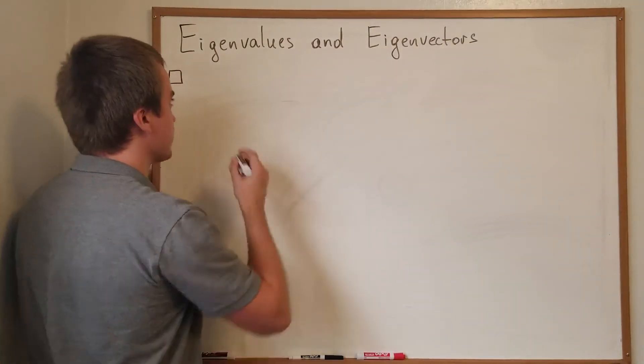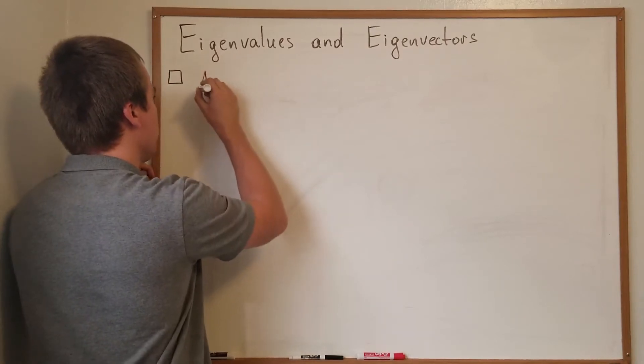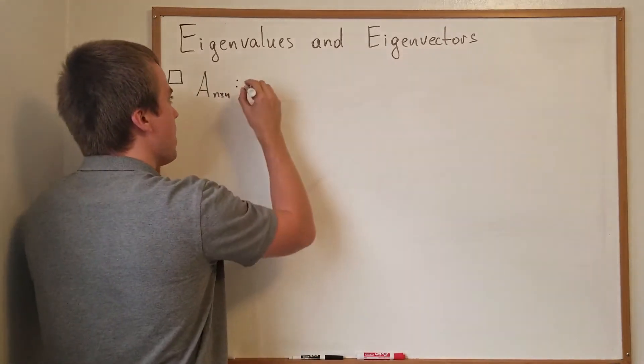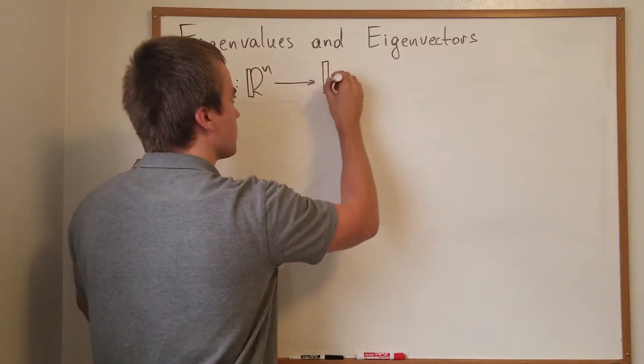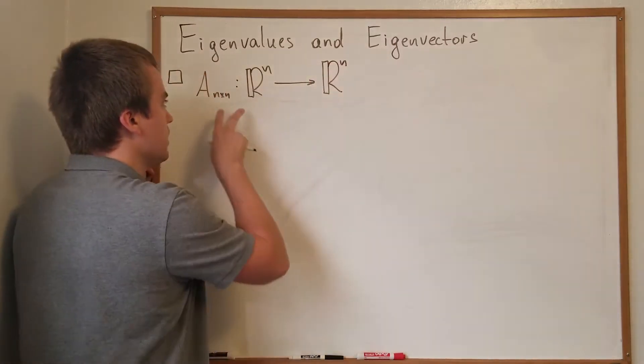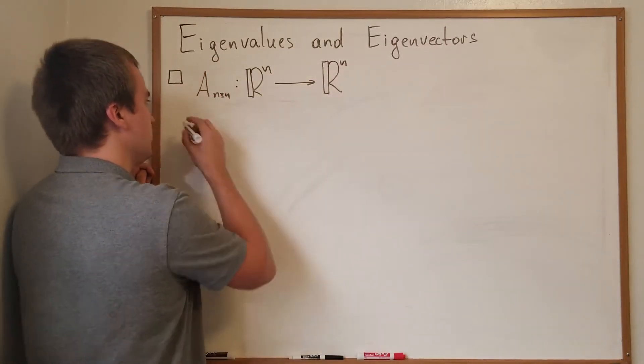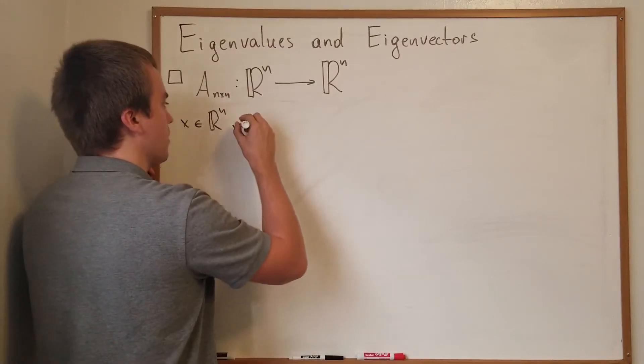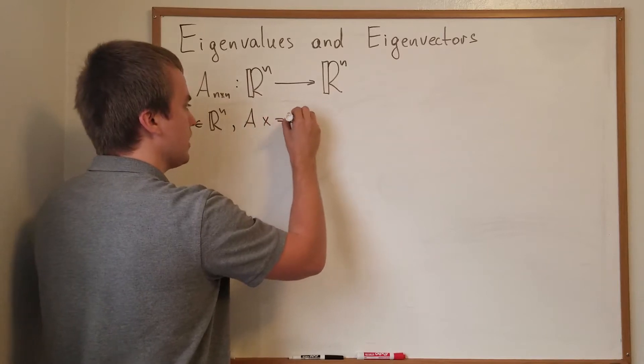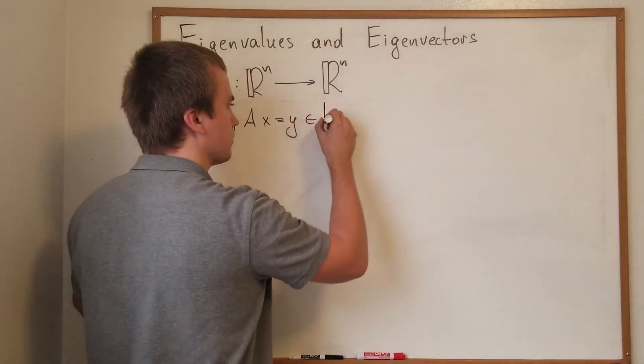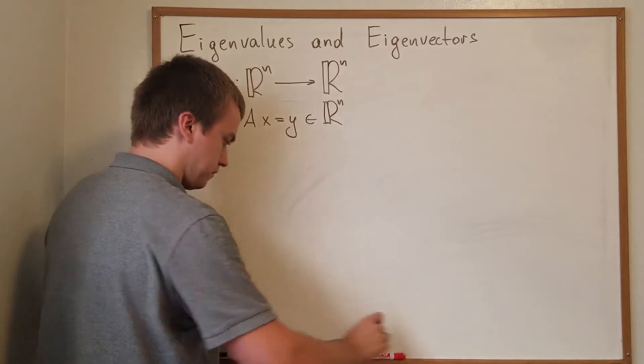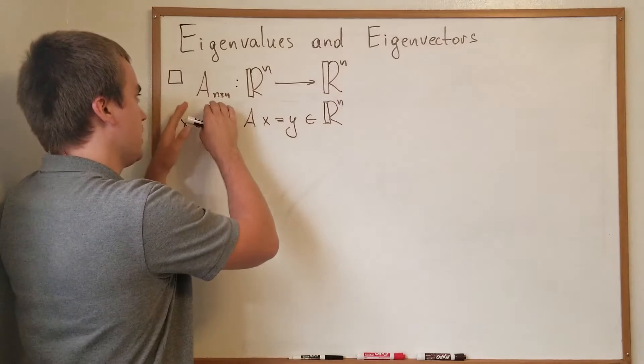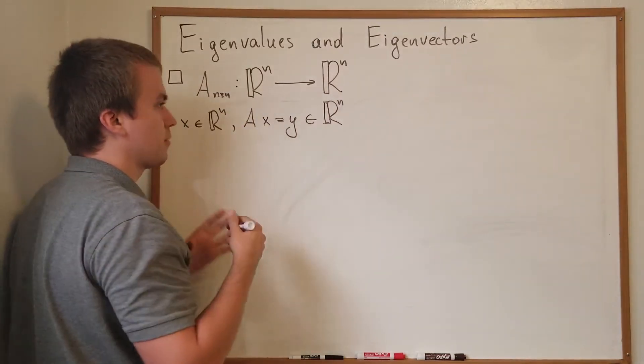In previous video we discussed that if we're given a real matrix n by n, we can think about this matrix as a mapping from R^n to R^n. In other words, if you take some element x in R^n and then apply our matrix A on the left, we get another vector y in R^n. Some facts about our objects: we know that R^n is a vector space and our A we can talk about as a linear transformation.